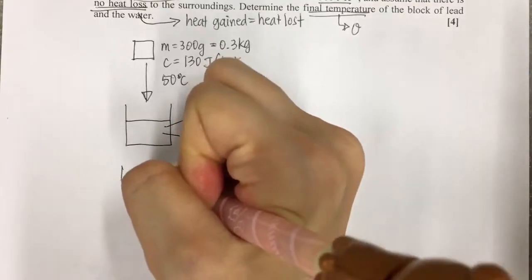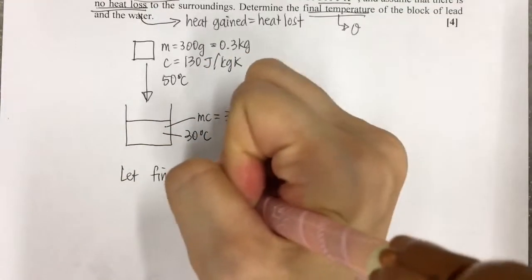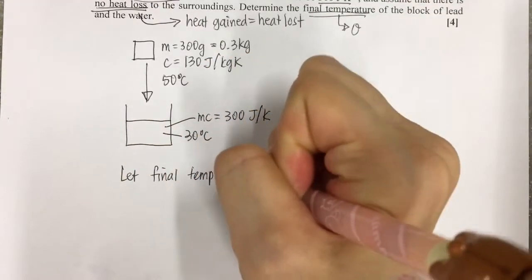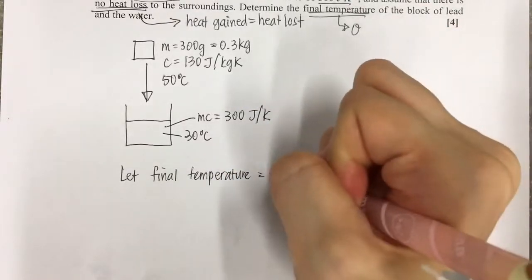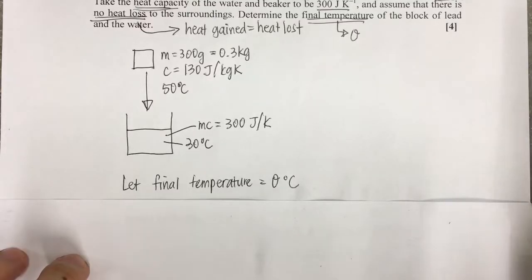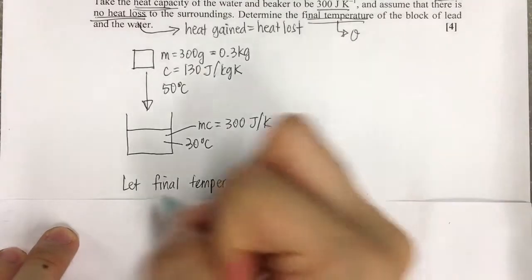Then we start with the workings. So we let the final temperature be equal to theta degrees Celsius. After this, we start off with the heat gain and heat loss. Heat loss will be by the lead.